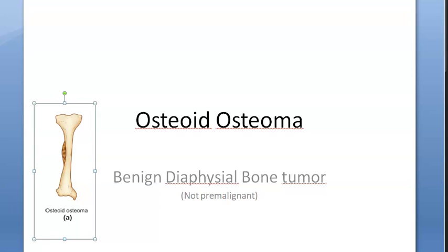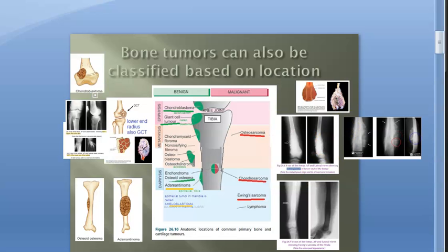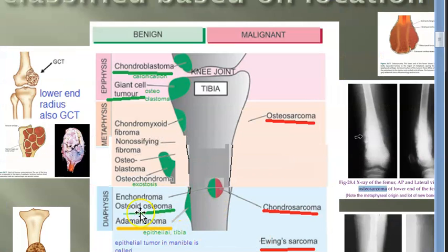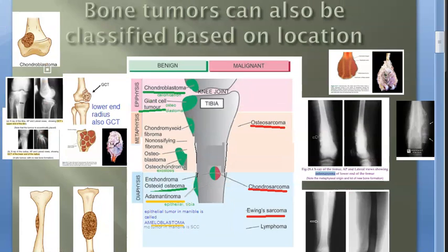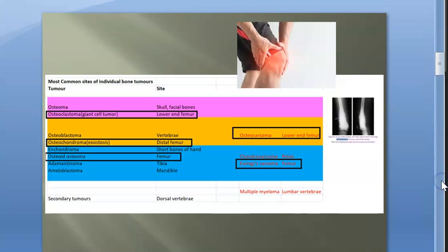In our bone tumor classification, osteoid osteoma appears under diaphyseal tumors. The main things to remember: it is benign, it affects the diaphysis, and there will be pain at night which is relieved by aspirin and salicylates.